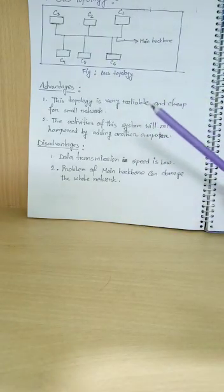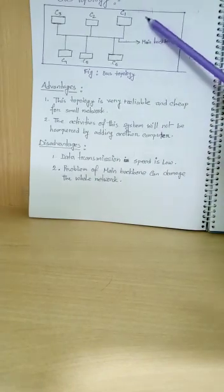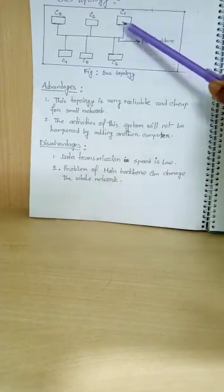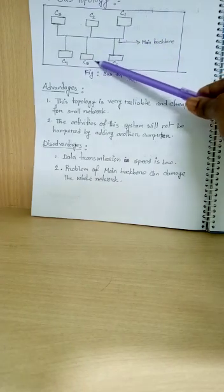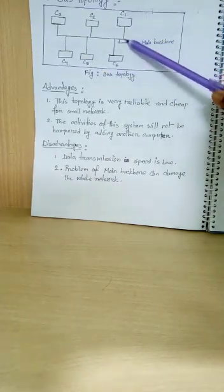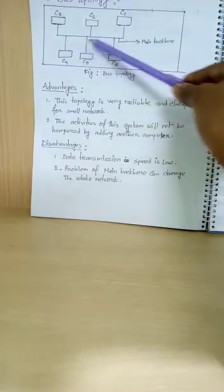How? So, coming example. See? Suppose, C1, computer number 1, want to pass one information in C5. So, what it will do? It will pass the information through the main backbone.